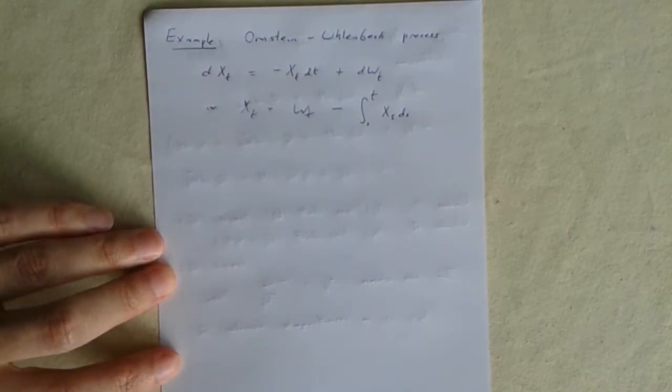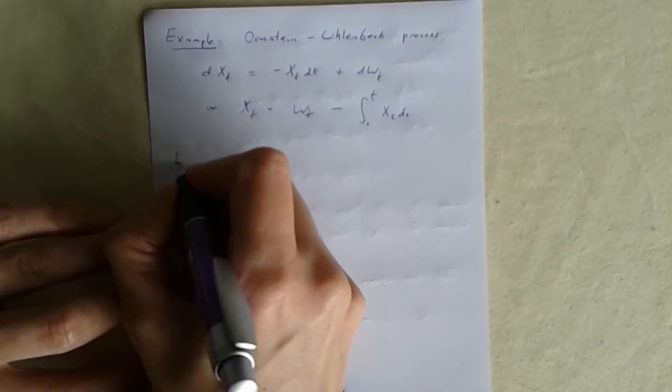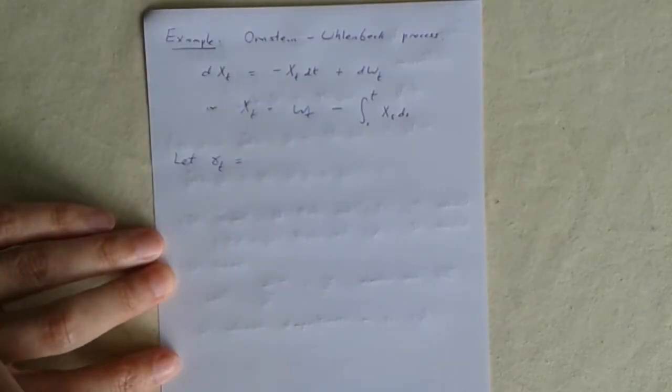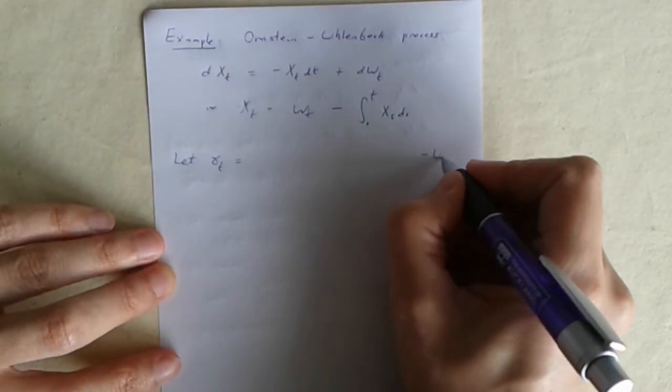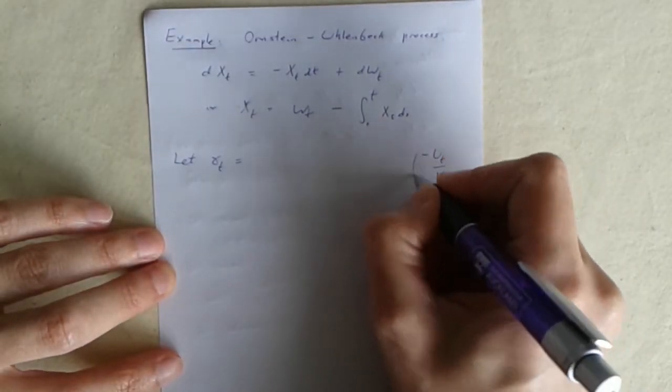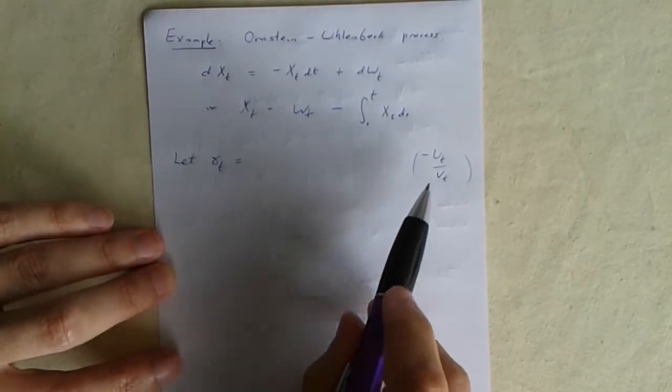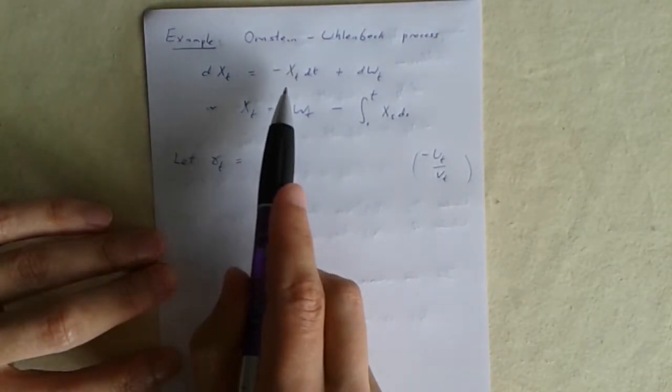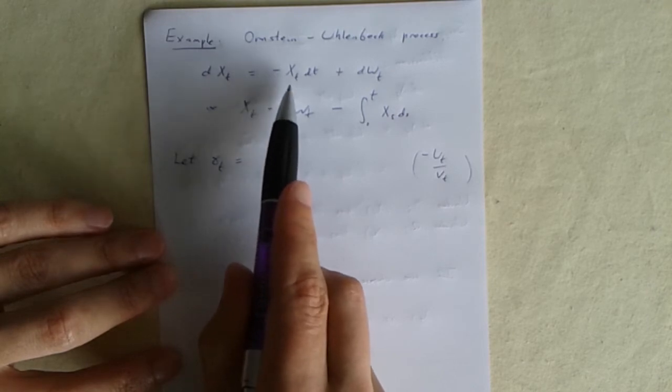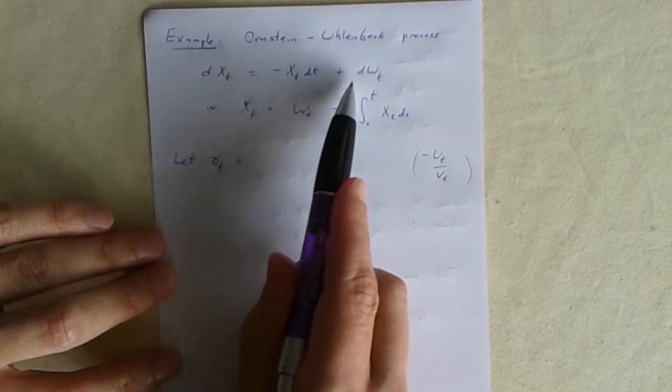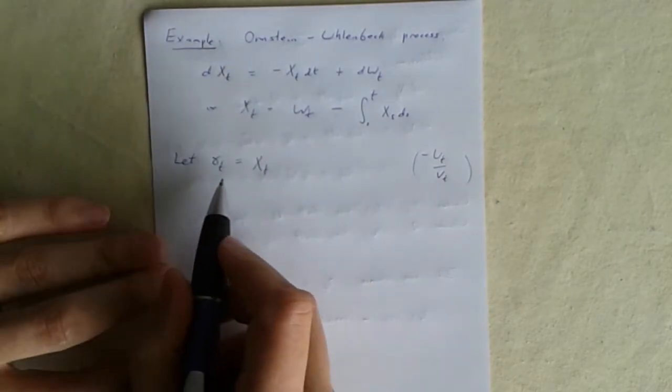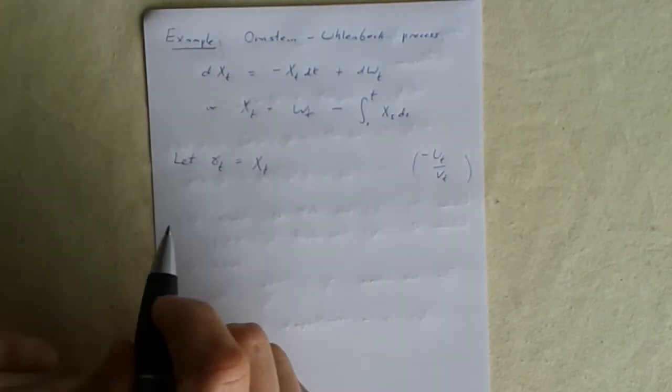Cameron-Martin-Girsanov, what do we need to do? What should the gamma be in this case? Well we want it to be that to make the thing a martingale minus the drift over the speed. For this process the drift ut is minus Xt and the speed is one, so in fact the gamma t should just be the process Xt itself.